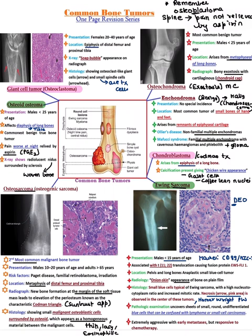Giant cell tumor — ECG means it is an epiphyseal tumor. Presentation is 20 to 40 years of age. On X-ray it shows a soap bubble appearance on the radiograph. On histopathology, it shows giant cells — but the giant cells are not the malignant part. The spindle cells are actually the tumor cells.